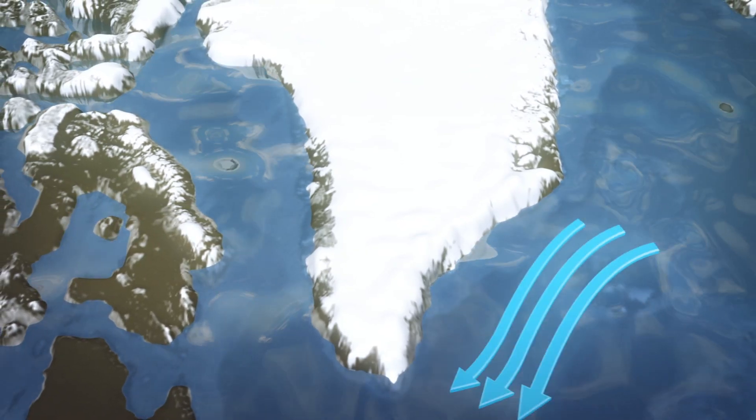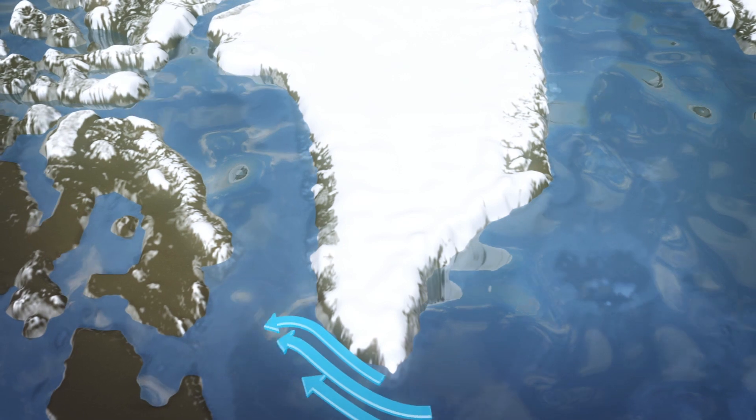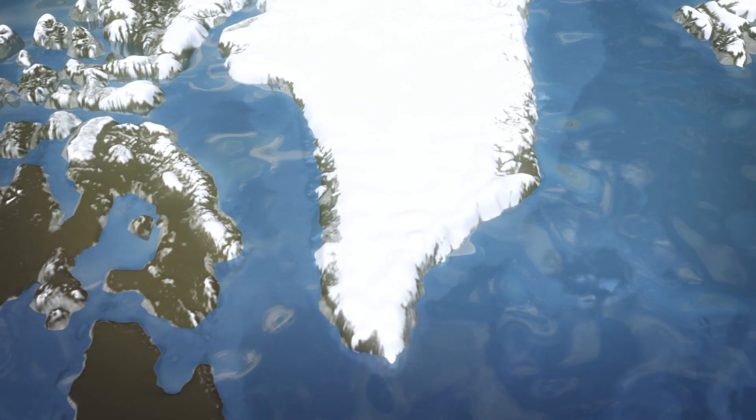The team used an ocean model to trace the cool water to a current that carries water around Greenland's southern tip and northward along its west coast.